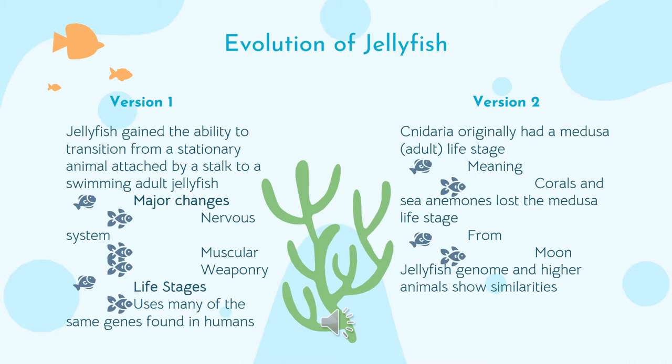In the second version, the phylum Cnidaria — which includes corals and sea anemones — originally had a medusa or adult life stage. This means that corals and sea anemones actually lost the medusa life stage over time. Scientists were able to see this by looking at the moon jellyfish genome and comparing it to what they call higher animals, which showed similarities and demonstrated that those animals lost the medusa life stage.